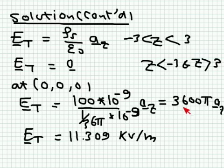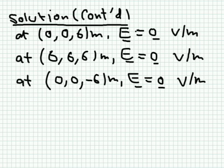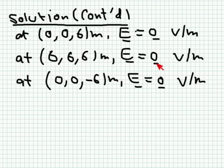At the origin (0,0,0): this point is between z = −3 and z = 3, so the field is ρ_s/ε₀ = 100 nC/m² divided by (1/36π × 10⁻⁹), which gives 3600π â_z, simplifying to 11.309 kV/m in the â_z direction. For the other given points — z = 6, z = 6 (6,6,6), and z = −6 — these are all outside the region between the two planes, so the field is zero, as the two planes cancel each other in those regions.